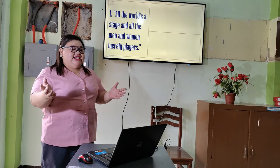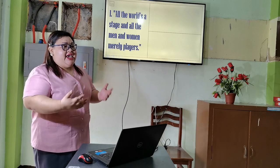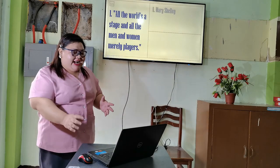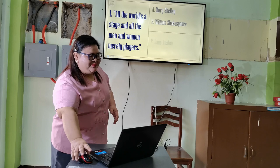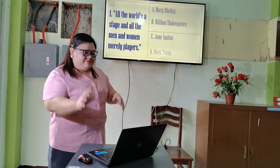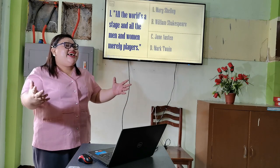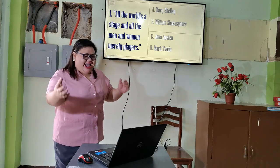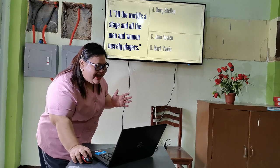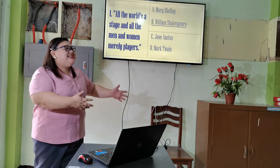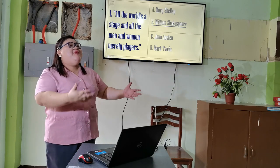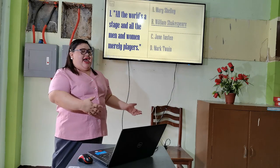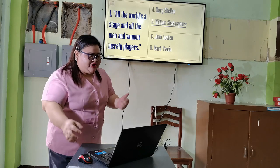Our first line: 'All the world's a stage, and all the men and women merely players.' Who said this? Is it A: Mary Shelley, B: William Shakespeare, C: Jane Austen, or D: Mark Twain? The correct answer is B — William Shakespeare. This is from the popular poem by William Shakespeare titled 'Seven Ages of Man.' In your Grade 9 English, you were taught this poem.